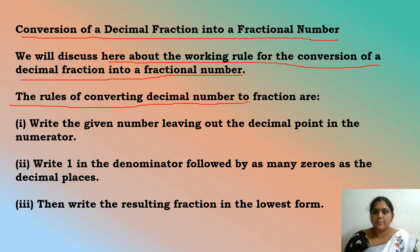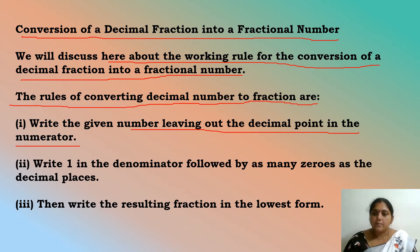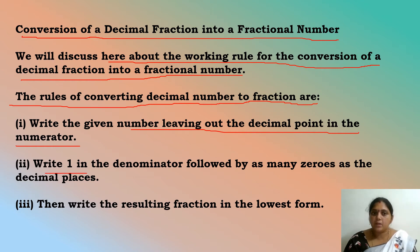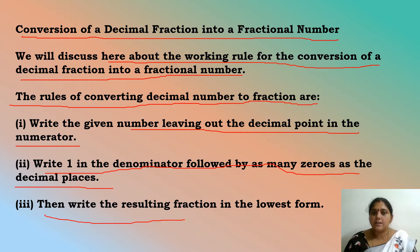The rules for converting a decimal number to a fraction are: write the given number leaving out the decimal point as the numerator — write all digits together as your numerator. Write 1 in the denominator followed by as many zeros as there are decimal places. Then write the resulting fraction in its lowest form.